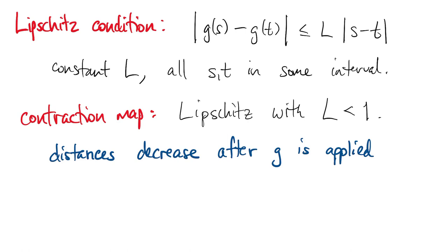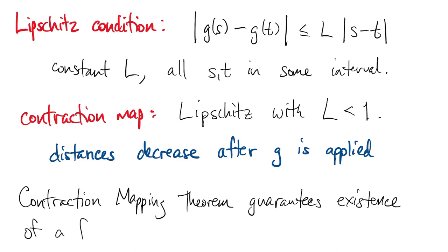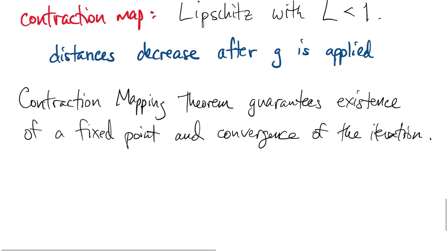It turns out there's a very famous theorem known as the contraction mapping theorem, which can guarantee that a fixed point exists and that the iteration will converge to it. It's a quite general theorem. It applies in higher dimensions and even in abstract vector spaces.